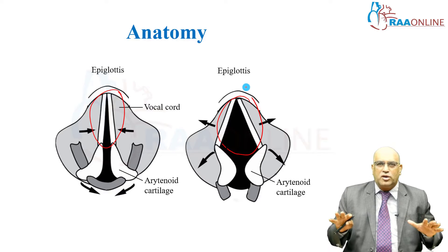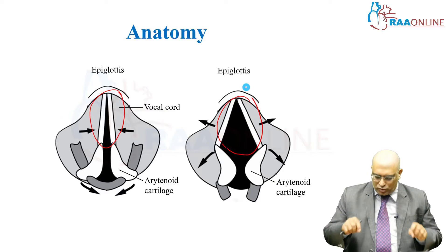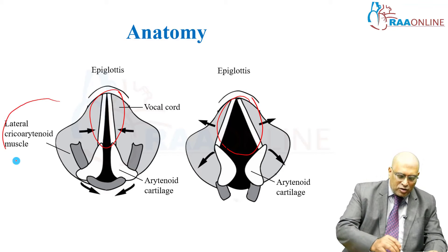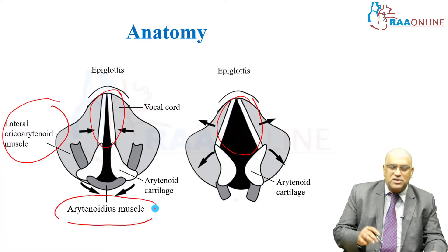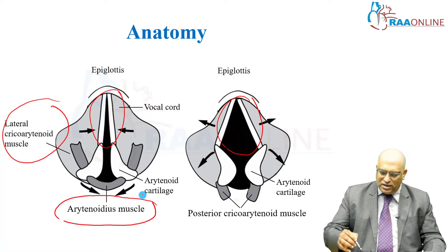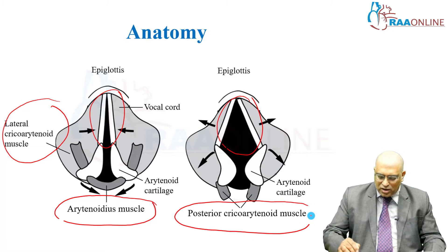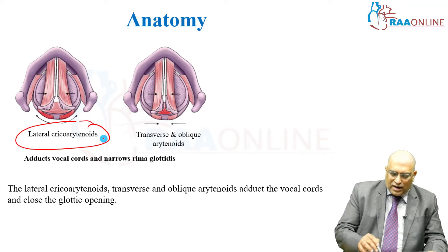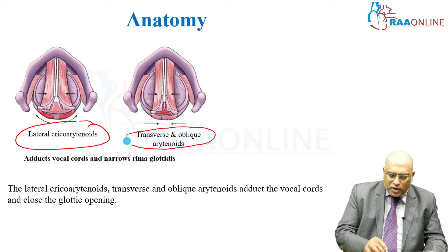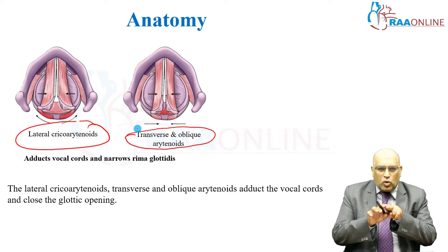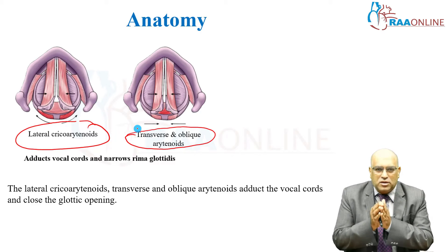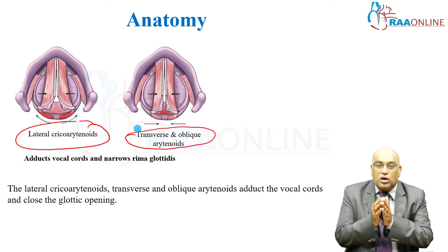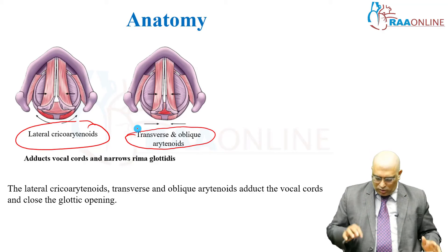The most important muscles which play a crucial role in opening and closing are the lateral cricoarytenoid, oblique and transverse arytenoids, and the posterior cricoarytenoid. The lateral cricoarytenoid and the transverse and oblique arytenoids adduct the vocal cord and narrow the rima glottidis. These three muscles adduct the vocal cord and close the glottic opening.